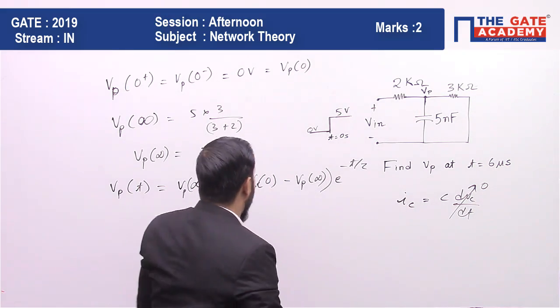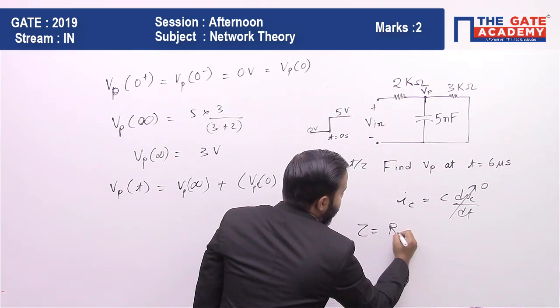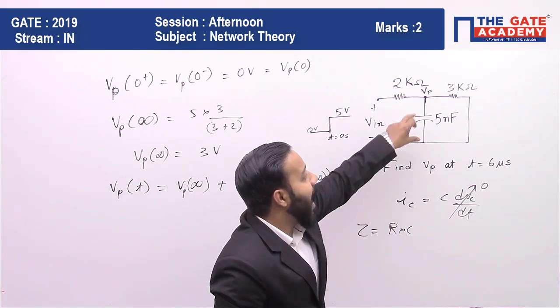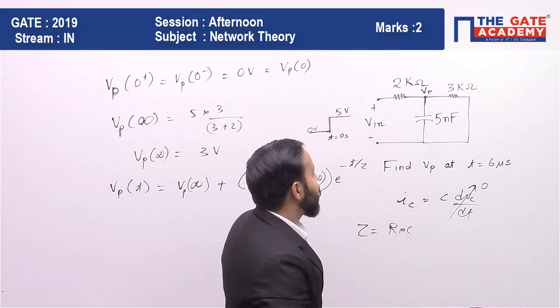For an RC circuit, τ is R times C. What is this R? R is the equivalent resistance as seen by the capacitor.